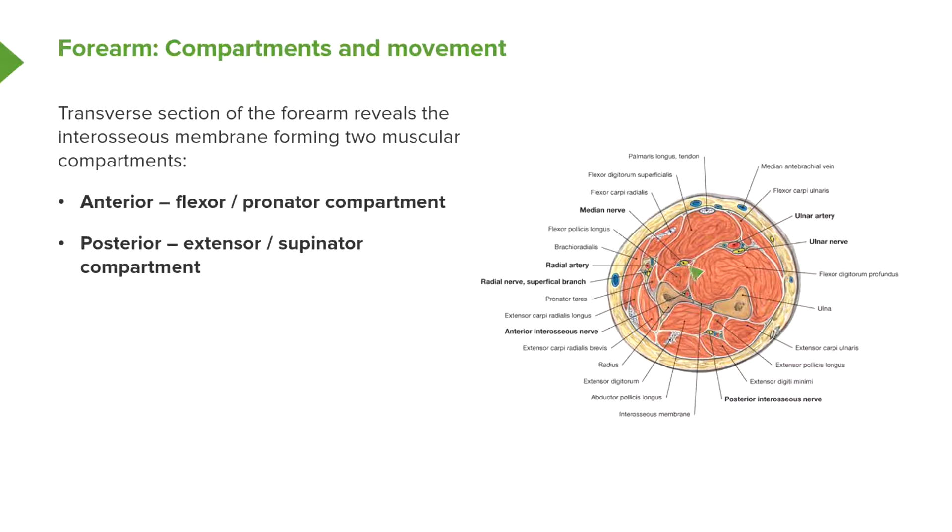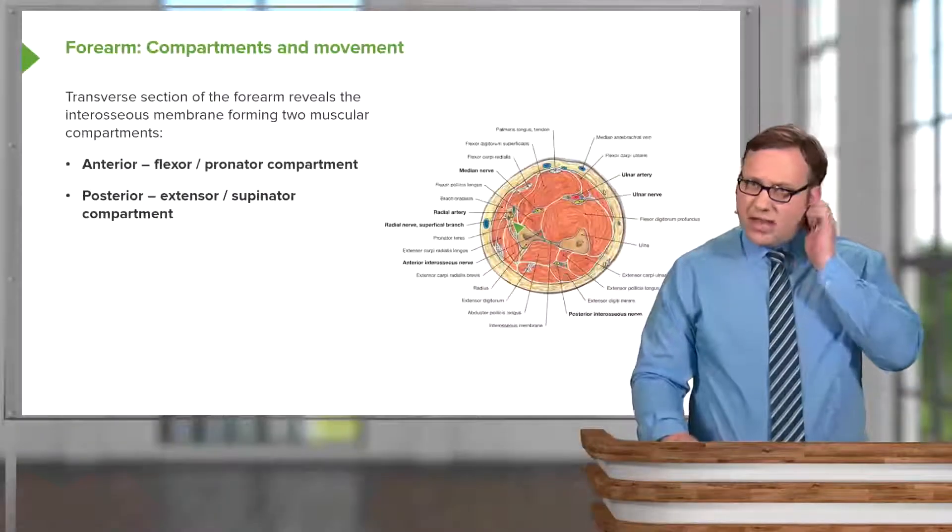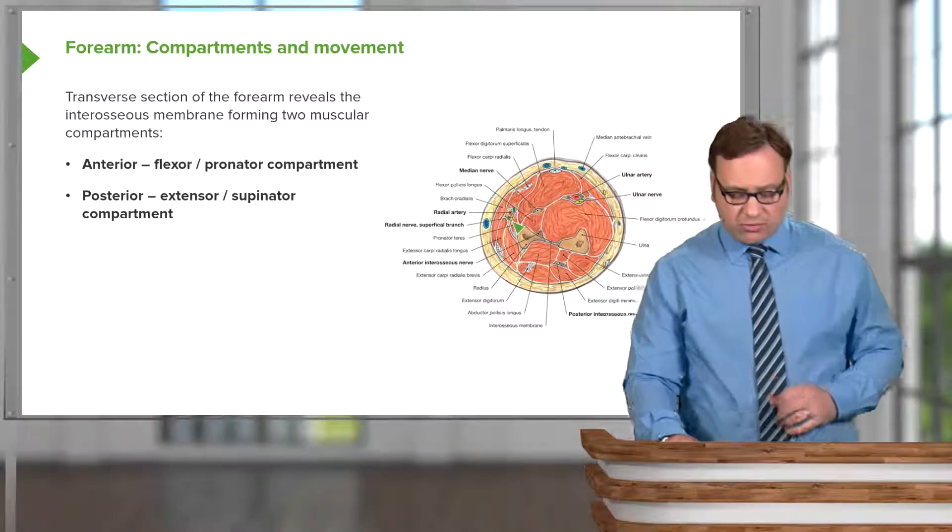We can pick up the median nerve. We can see the ulnar nerve and the ulnar artery. We can see the radial artery and the radial nerve as well. And we'll look at these in more detail as we go through this lecture.